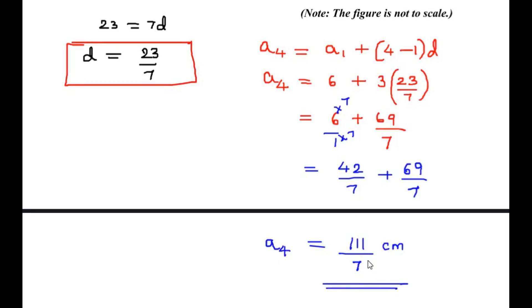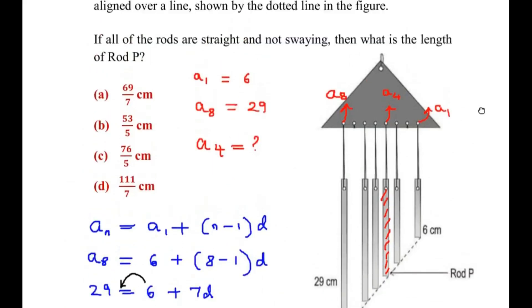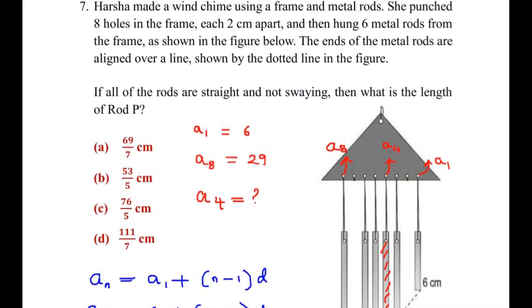So let us see if this is in the options. So yes, here the answer is option D. So let us mark here 111 over 7 cm.